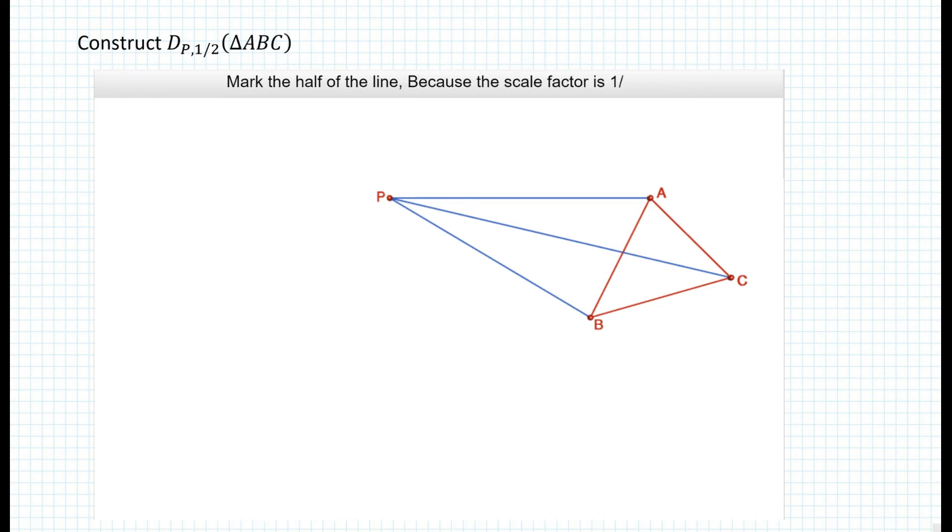Now we want to mark the half of the line because the scale factor is one half. So how do we do that? We bisect each line here. And again, this can be constructed using a compass and straight edge. This is up to you to do now. We're going to join these.